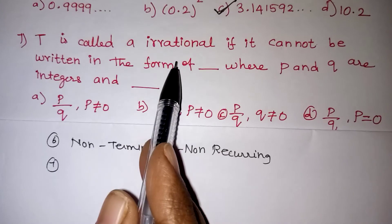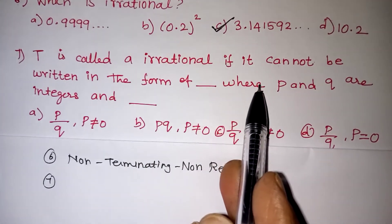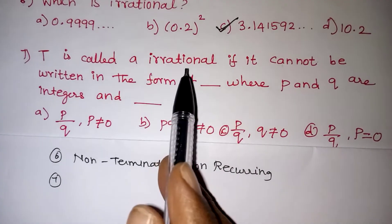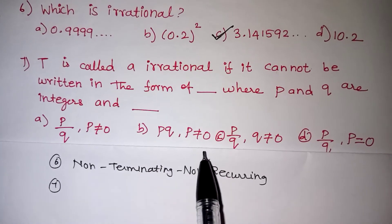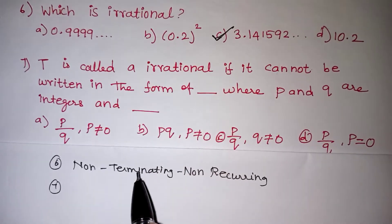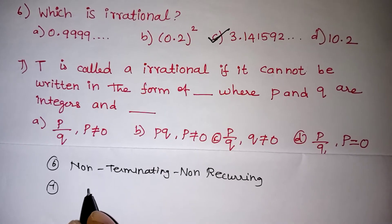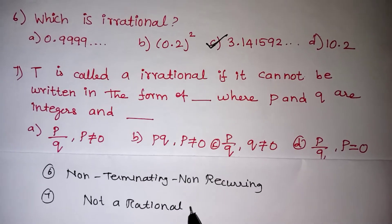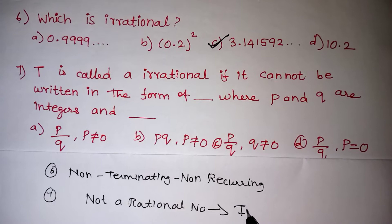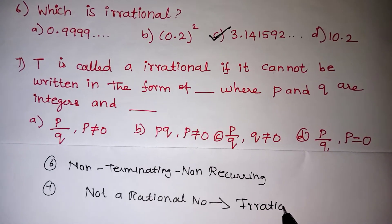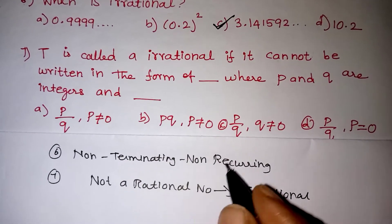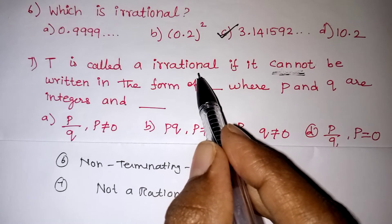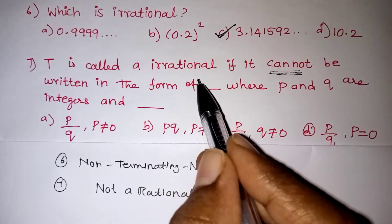The next problem: t is called an irrational number if it cannot be written in the form p/q, where p and q are integers. One more definition: the number which is not a rational number will be called an irrational number. We know the condition for a rational number, so the condition that cannot satisfy irrational is the rational number condition — the rational number condition will never satisfy for irrational.